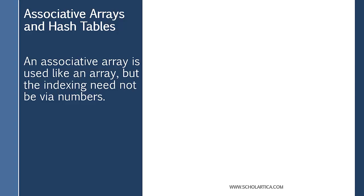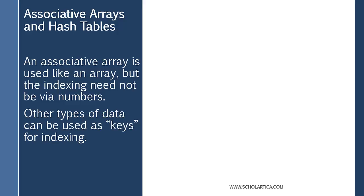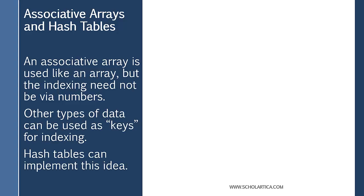Associative arrays, while they're not arrays, get used basically in a manner similar to an array. The idea of indexing into an array — taking an array and using square brackets with a number as an index — is what you're accustomed to with arrays. It's a really similar idea with associative arrays: we index into an associative array.